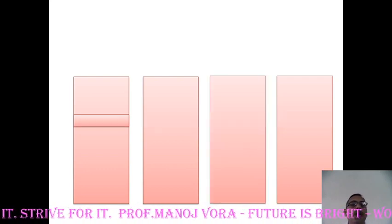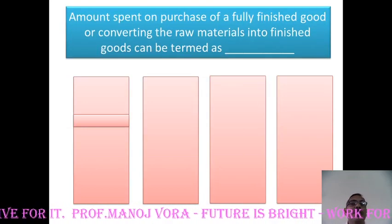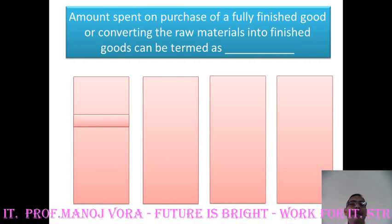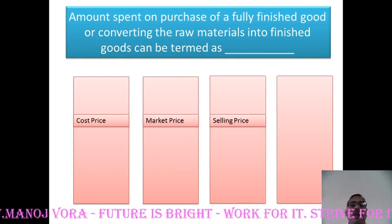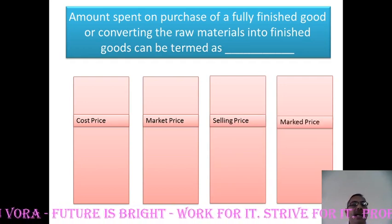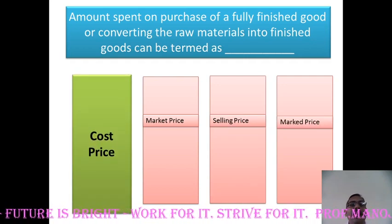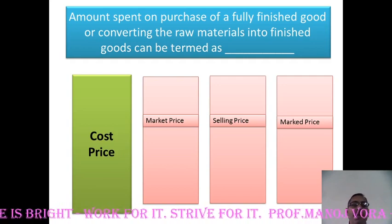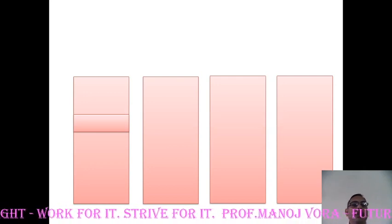Next question: amount spent on purchase of a fully finished good or converting the raw material into finished good can be termed as — first option cost price, second option market price, third option selling price, and fourth option mark price. Your right answer: it should be considered as cost price. Any amount spent either to purchase a fully finished product or to convert it into a fully finished product will be included in cost price.